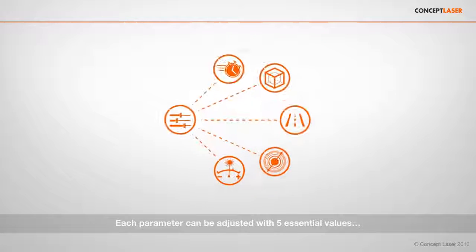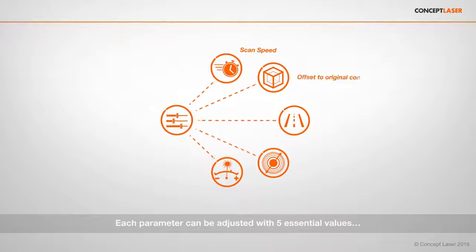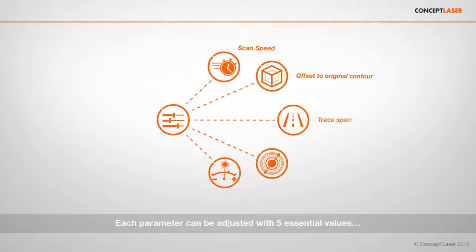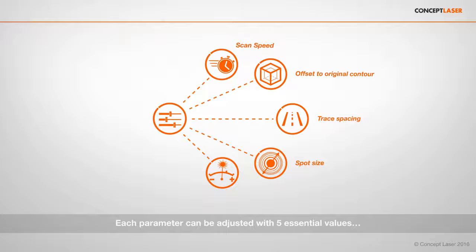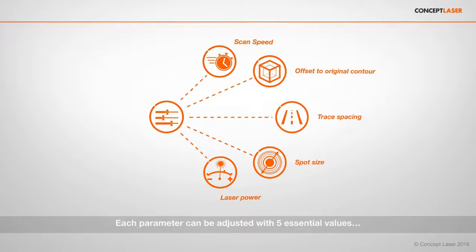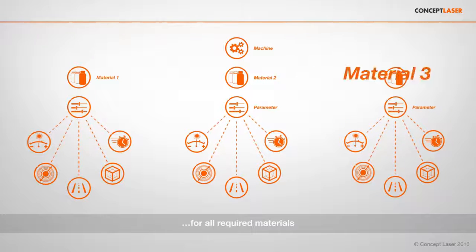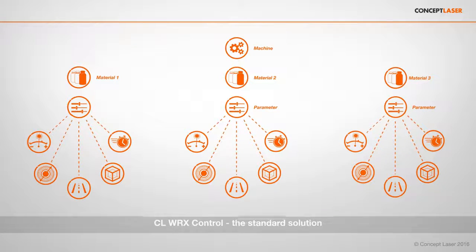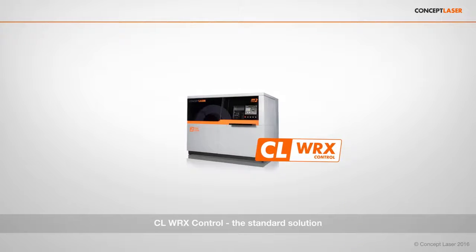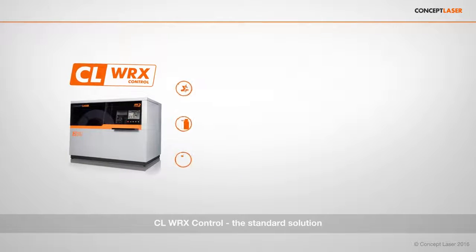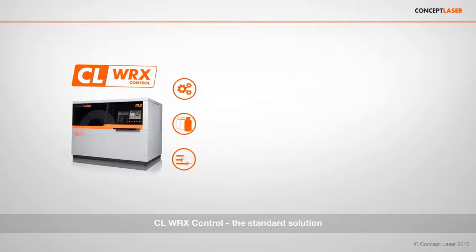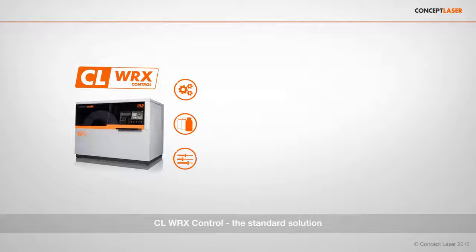For each parameter, five essential parameter values, such as scan speed and laser power, can be set. This is, of course, always tailored to the powder material of your choice. Along with your system and machine software CLWorks control, you already have everything you need to build your specific parts.